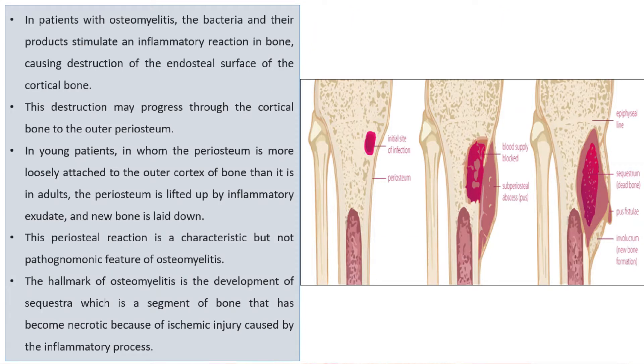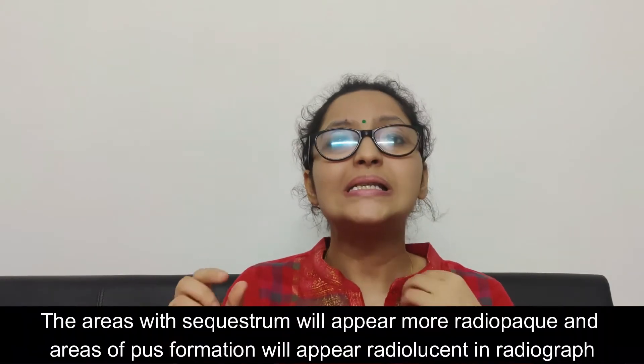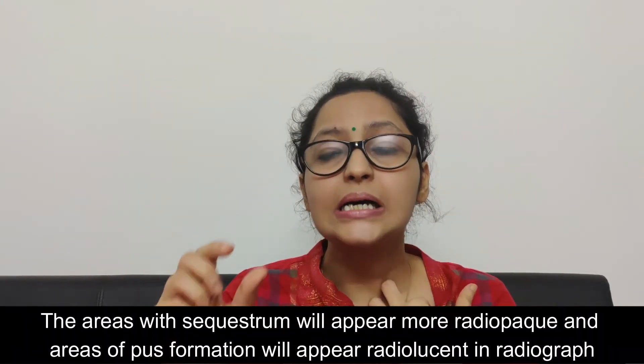One very important feature is the formation of sequestra. Sequestra is basically dead, necrotic bone present due to ischemic injury. Radiographically, it appears more radio-opaque than the surrounding structure. You will see radio-opaque areas interspersed with radiolucent areas — that is the pathognomonic feature.